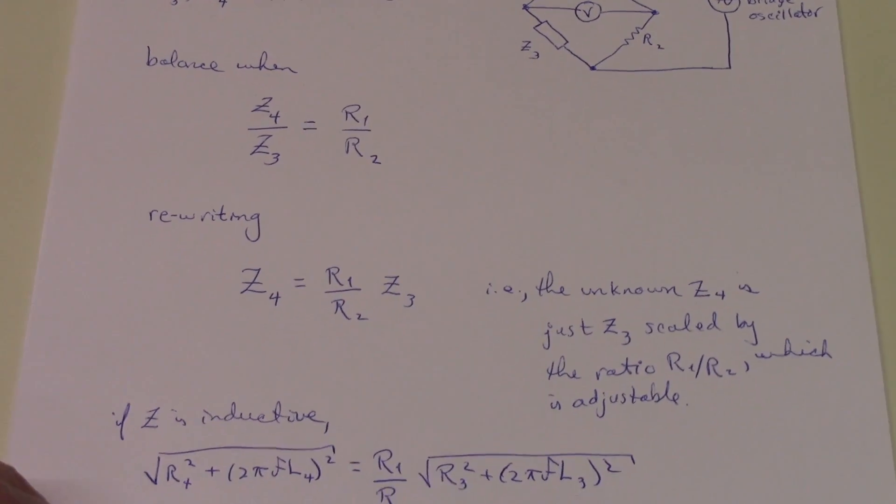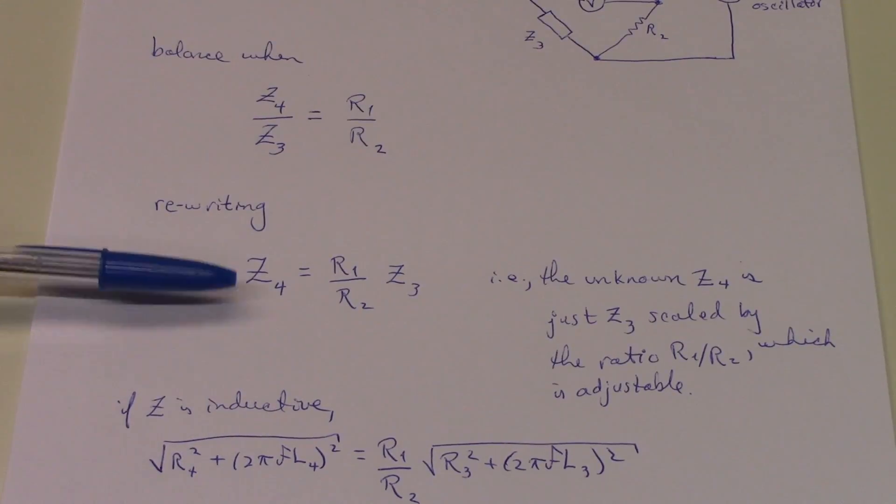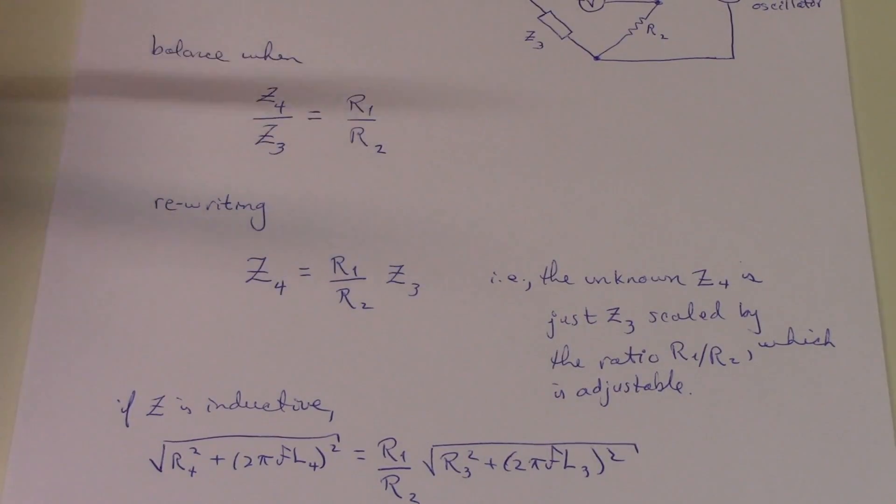So we can rewrite that, of course, to be Z4 is equal to R1 over R2 times Z3. Or in other words, the unknown impedance Z4 is just the known impedance Z3 scaled by the ratio of the two resistances, R1 to R2.